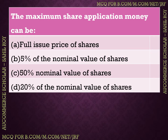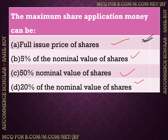What is the maximum share application money? The options are: full issue price of shares, 5% of nominal value, 50% of nominal value, or 20% of nominal value. The maximum share application money can be the full issue price of shares. Option A is the correct answer.